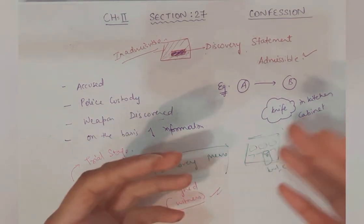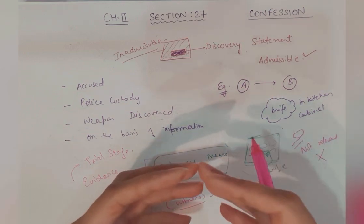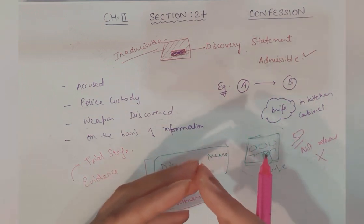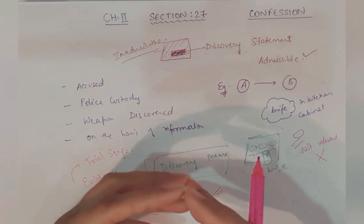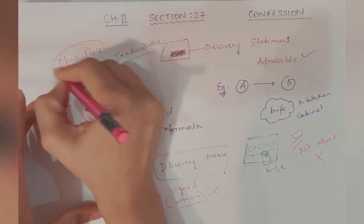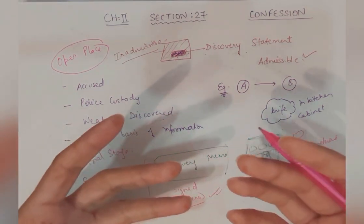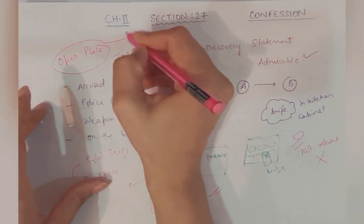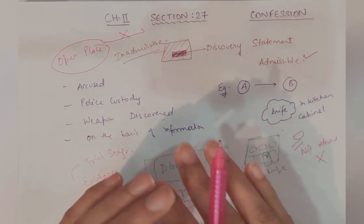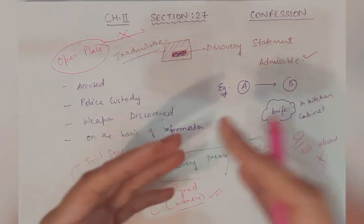Example: A told that knife is behind the bed, and then knife was recovered on that basis. Object should be discovered from the place of hiding. It is essential that the object should have been discovered from the place of hiding. If the object was found at an open place — yeh bhi ek dekhne wali baat hai — where other people also could have seen and informed the police, then Section 27 would not apply. So yeh tabhi sahi hoga jab woh actually kahi se discover ho aur wahan par koi normal person nah dekh paye — unke reach se woh bahar ho.